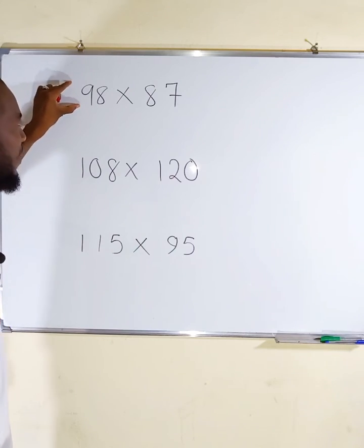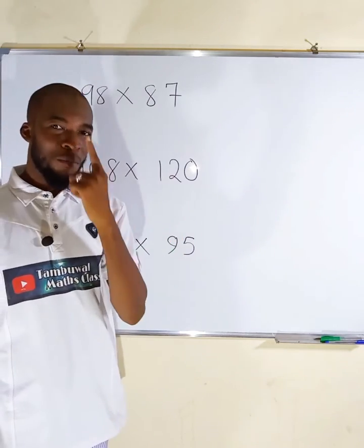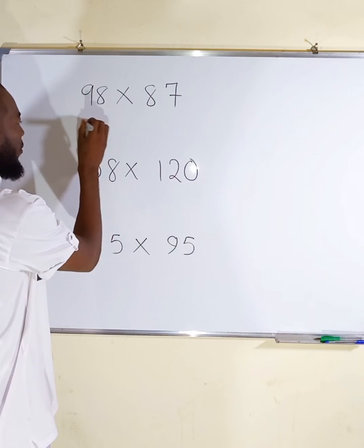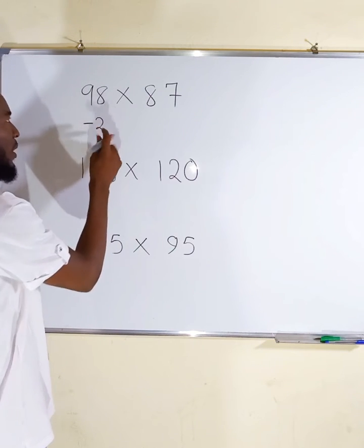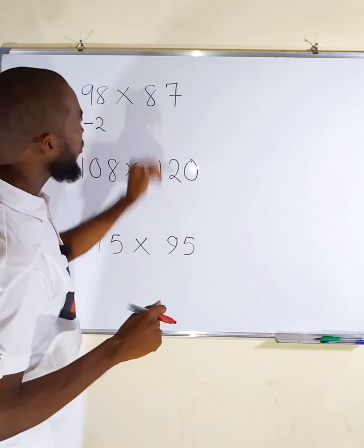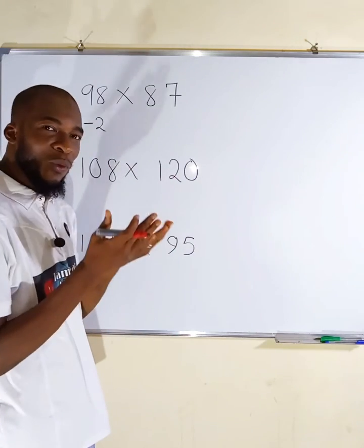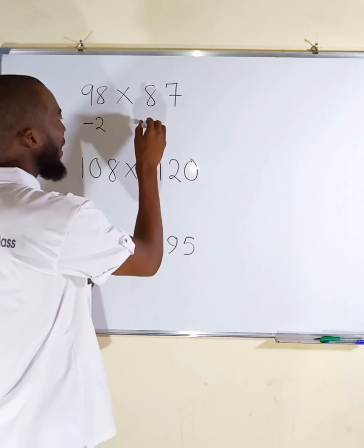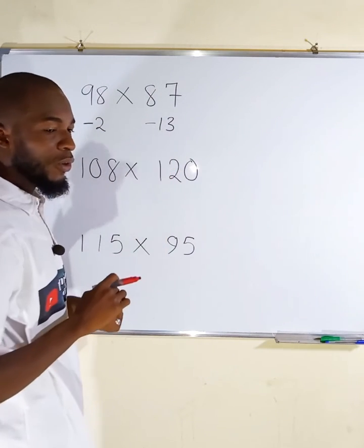If you examine these two numbers, this one is less than 100 by 2, so you write minus 2 here just below it, while this one is less than 100 by 13, so it is 13 less than 100. This is the first thing to do.